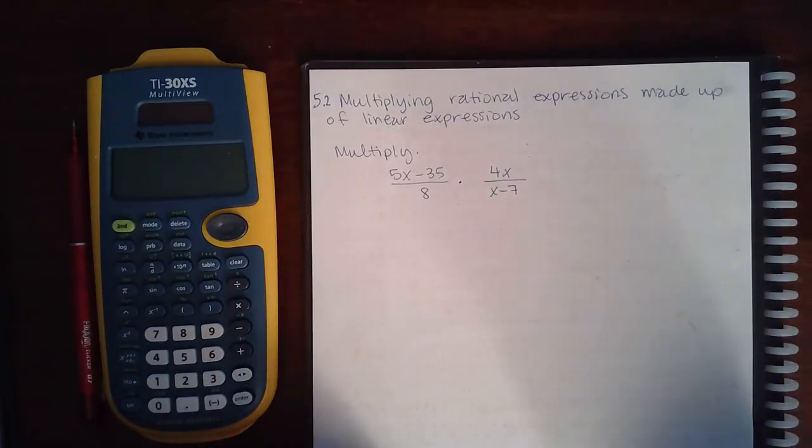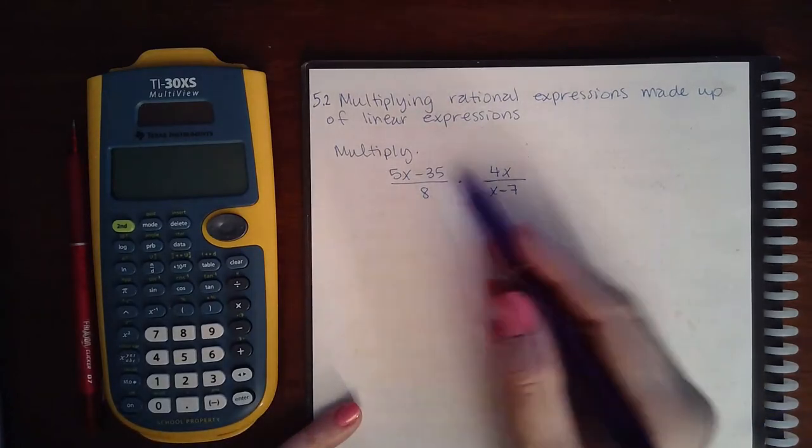Here we have 5.2 multiplying rational expressions made up of linear expressions. First you have to factor everything.